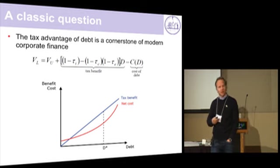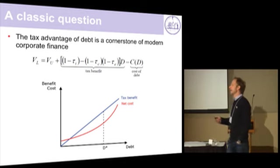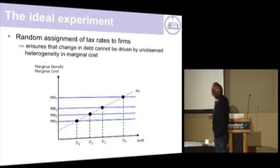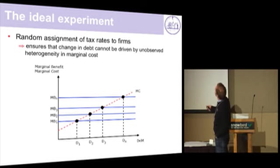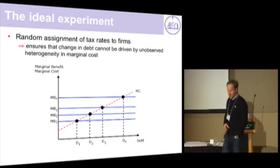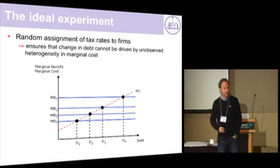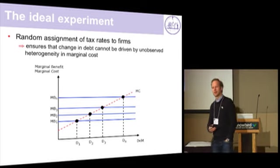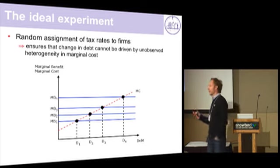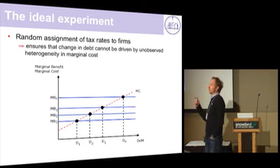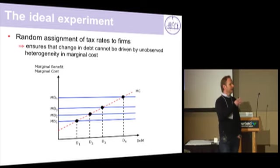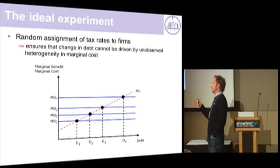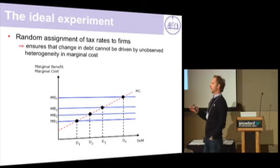Yet to see whether that's out there in the world is a bit challenging, because what's the ideal experiment? If we had a wish list, what we would do is: you would be my firms, and I would just randomly allocate tax rates to you, and then I would record the amount of debt that you choose.